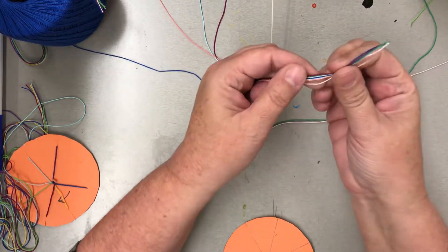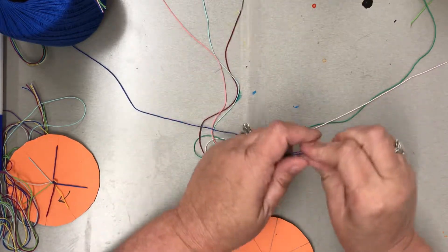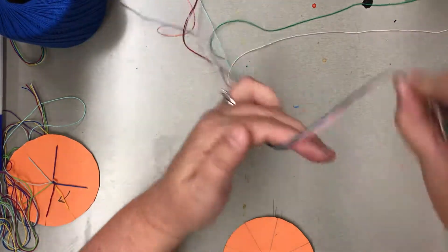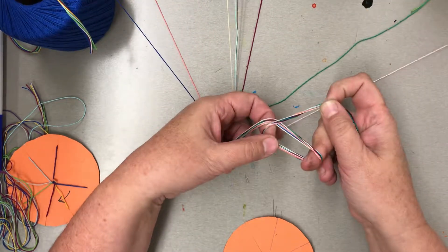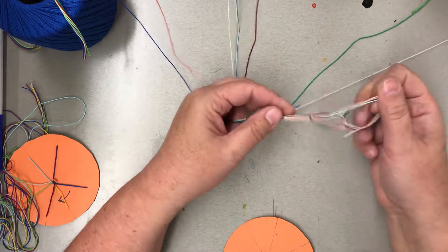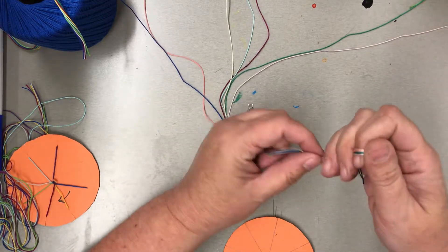Once you have the end of all seven colors, you want to tie a knot. I like to call this knot the water balloon knot. Just wrap it around two fingers to form a loop, and then put all the ends through the loop. So you need a loop on the end of your strings.